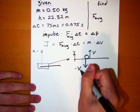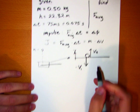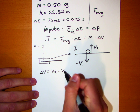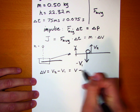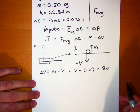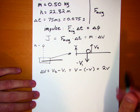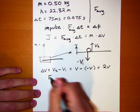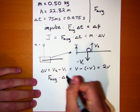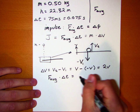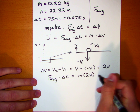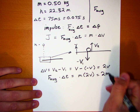So if this is the first speed and this is the second speed, the change in speed is going to equal v2 minus v1, which is v minus negative v, which equals 2v. We can now update our impulse equation: F average times delta t equals m times delta v, which we've established is going to equal 2 times m times v.